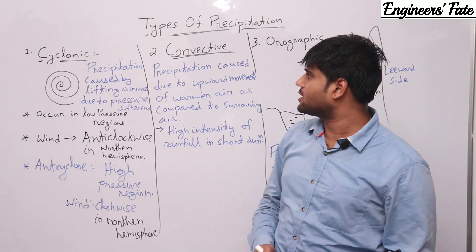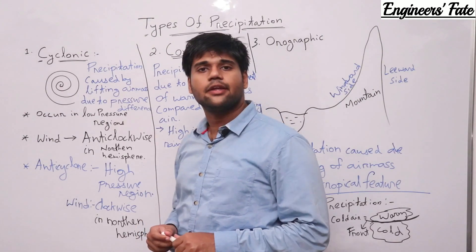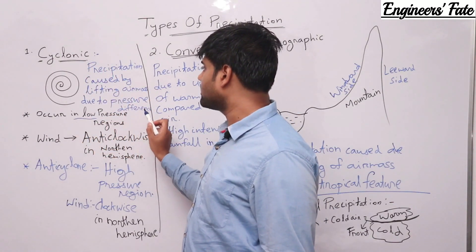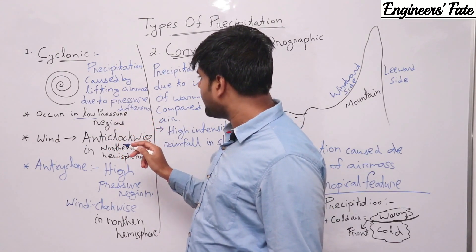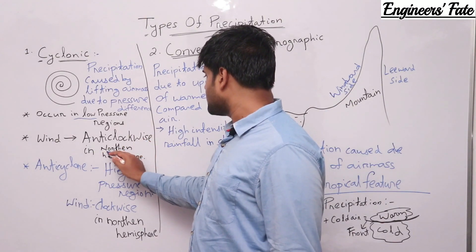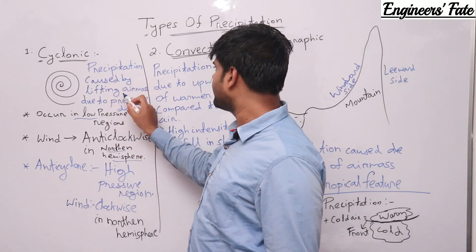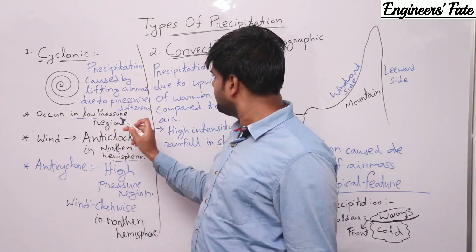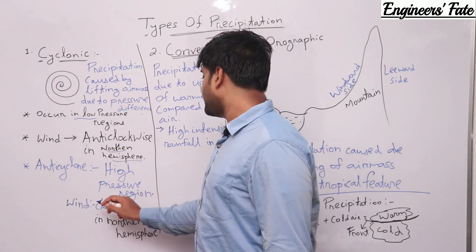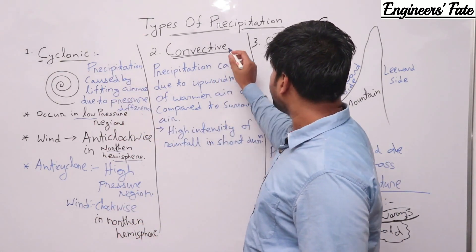Let's discuss the types of precipitation. The first one is cyclonic precipitation, which you can generally find in weather forecasts. It occurs in low pressure regions and the wind is in an anti-clockwise direction in the northern hemisphere. The definition is: precipitation caused by lifting of an air mass due to pressure difference. Anti-cyclones occur in high pressure regions and the wind is generally in a clockwise direction in the northern hemisphere.